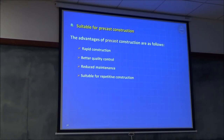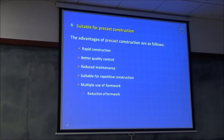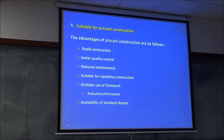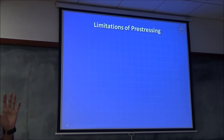Suitable for repetitive construction, multiple use of formwork — you save on formwork cost. You can actually buy a pre-stressed concrete beam much the same way as you buy a rolled steel I-section. Those are the advantages. What are the disadvantages?